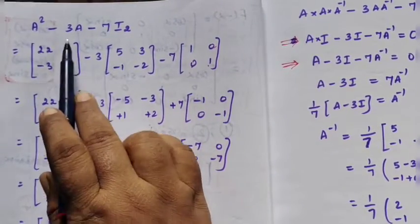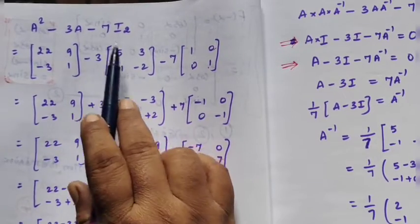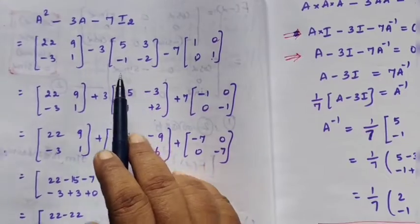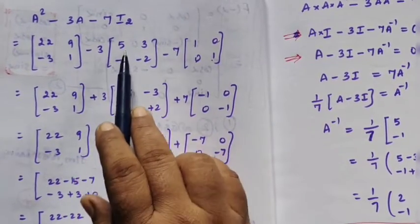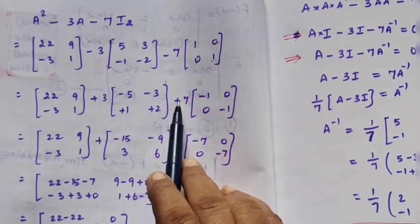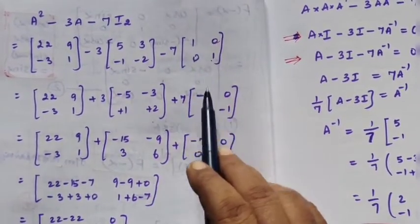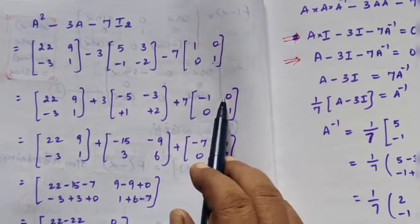So we substitute the values. A² we previously found. The A value is from the question. Then I₂ we substitute. The minus sign changes to plus. Now multiply by 3. Now multiply by 7.